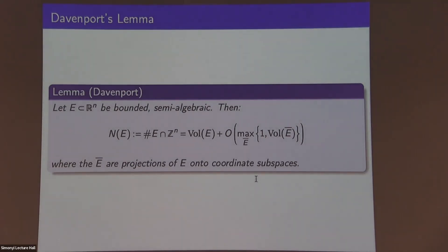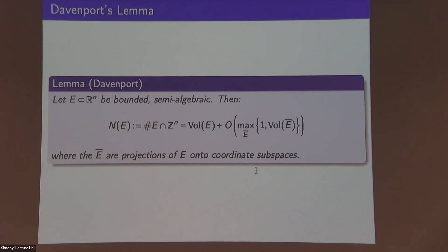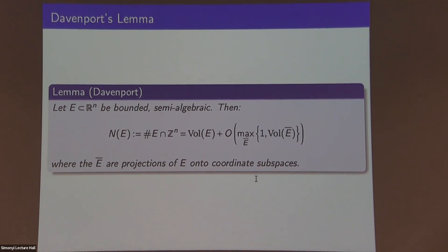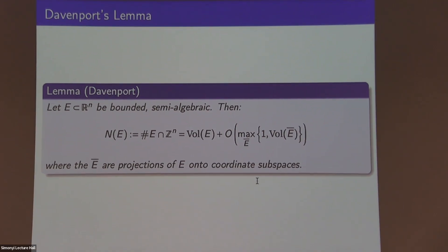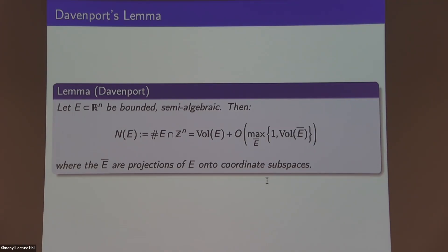Davenport's Lemma is a statement about the number of integral points in regions of Euclidean space. Suppose you have a circle or a sphere in R³ and you try to count the number of points that all have integer coefficients — those coming from a lattice. Davenport's Lemma tells you how to express this number of points within the sphere in terms of a formula involving volumes.